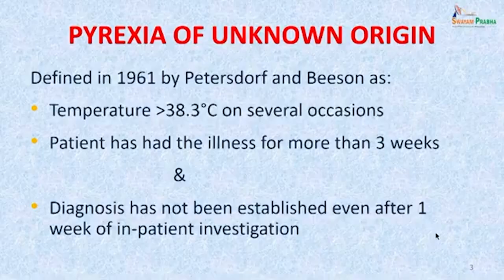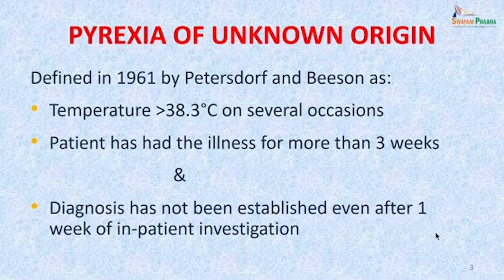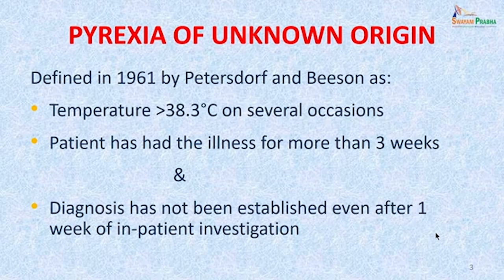What exactly is pyrexia of unknown origin? It was formally defined in 1961 by Peters, Dorf and Bison. They defined it as temperature more than 38.3 degrees centigrade on several occasions, patient has had the illness for more than 3 weeks, and diagnosis has not been established even after one week of inpatient investigation. Only then should it be called pyrexia of unknown origin.